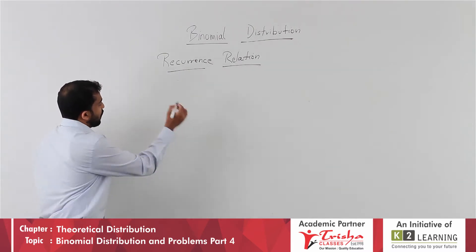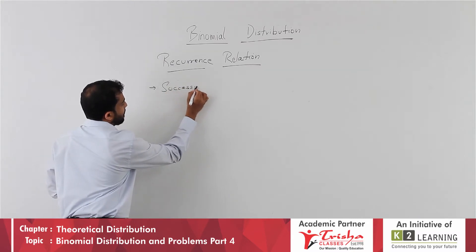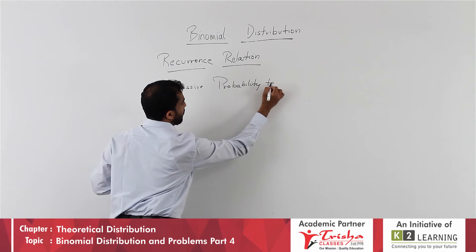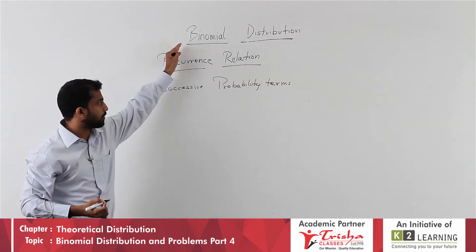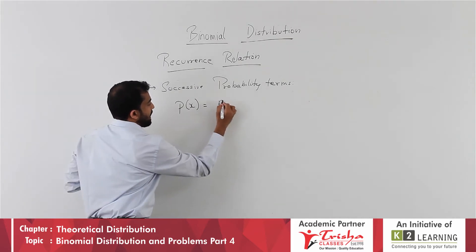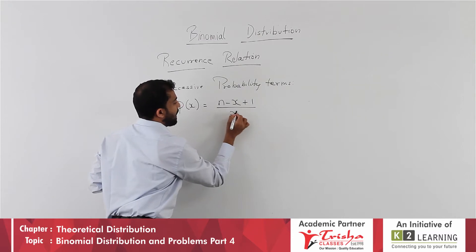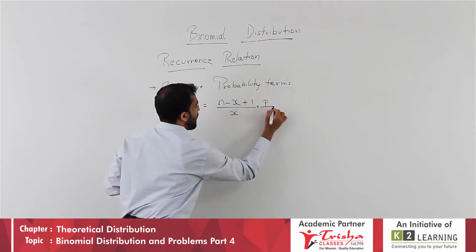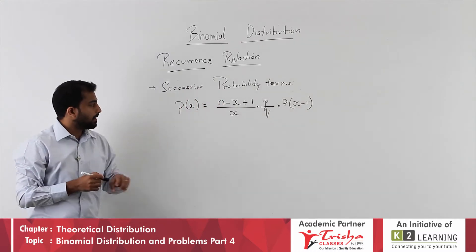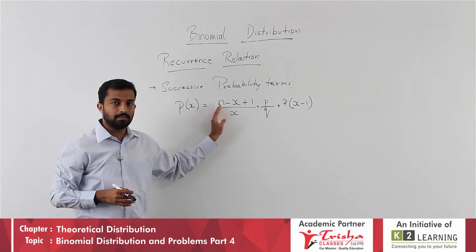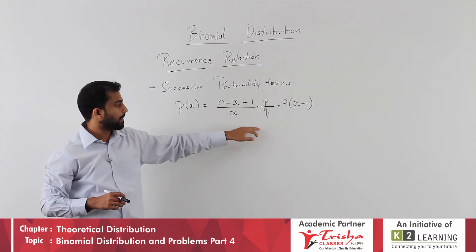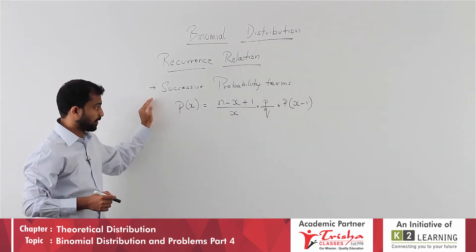Let us see both formulas. For successive probability terms under binomial distribution, the formula is: P(x) = [(n − x + 1) / x] × (p/q) × P(x − 1). That means the successive probability term equals (number of terms minus the given term plus 1) divided by the term, times (success/failure), times the previous probability term.